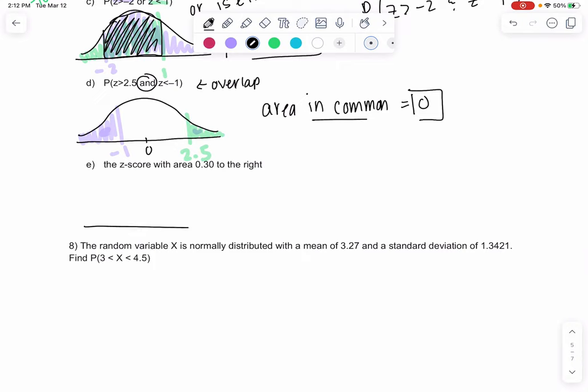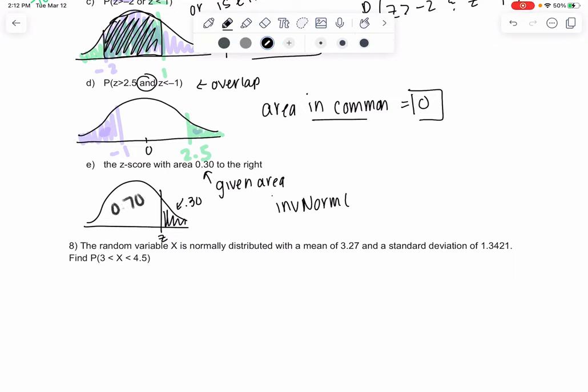The Z-score with area of 0.3 to the right. Now we're given area. This is when we go backwards. So 0.30 to the right. We learned to use inverse norm, but inverse norm is area to the left. So there's 0.70 left over because these add up to one.